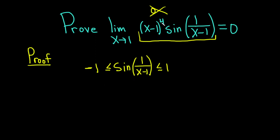Now we want to add this piece here, this x minus 1 to the fourth. So this is always going to be positive as long as x is not 1. So we can multiply this inequality by x minus 1 to the fourth power. When we do that, we get minus x minus 1 to the fourth power, less than or equal to x minus 1 to the fourth power times the sine of 1 over x minus 1, which is less than or equal to x minus 1 to the fourth power.